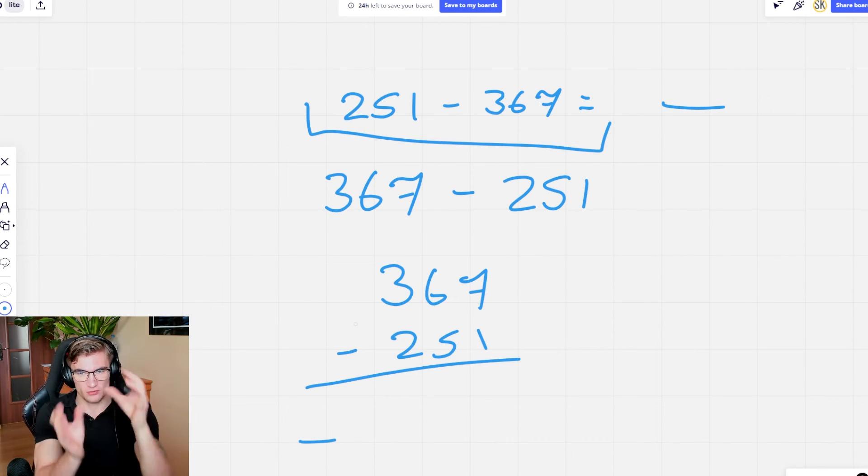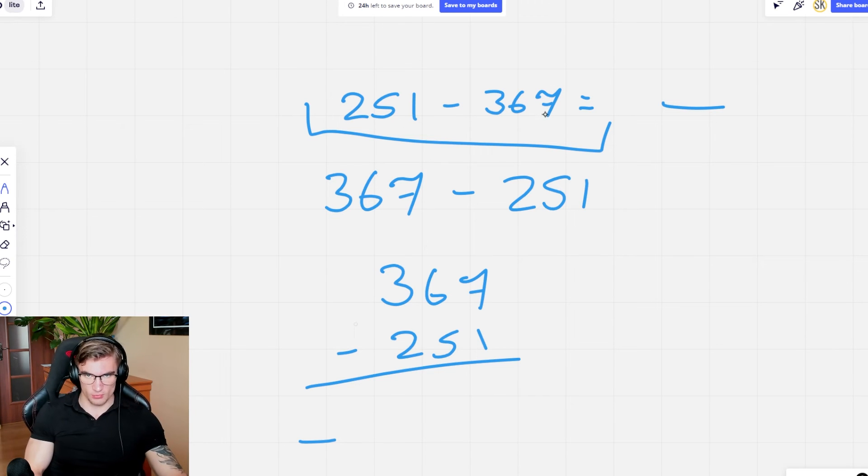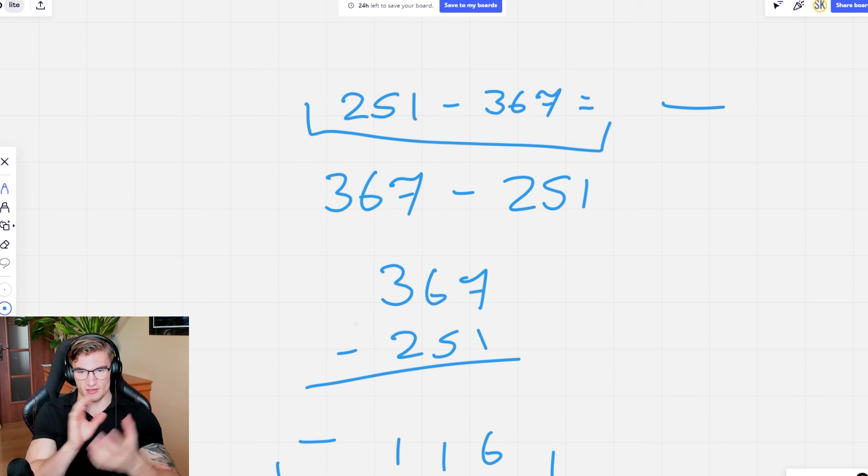that. You see what I'm saying? So you can flip them, just remember about the negative if you're doing a bigger number from a smaller number. So 7 minus 1 is 6, 6 minus 5 is 1, 3 minus 2 is 1, so answer is negative 116. Right? I don't know if I did it that—normally